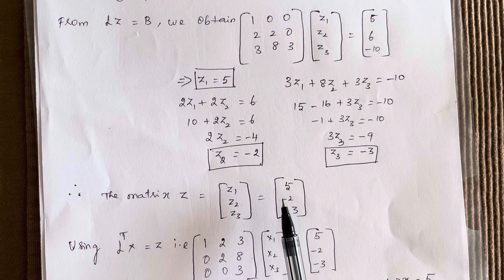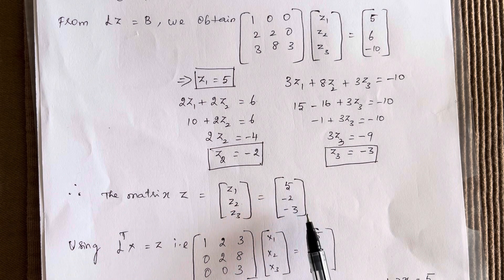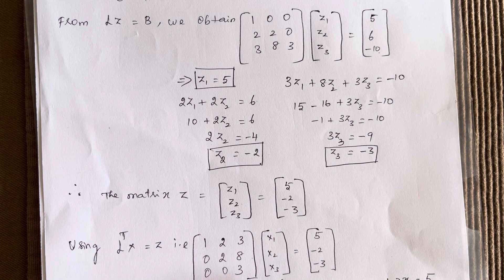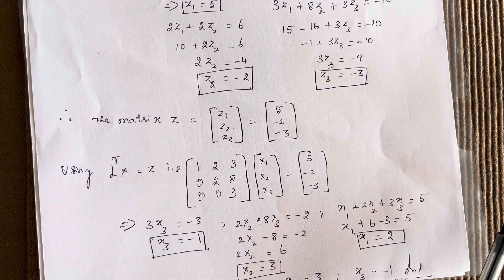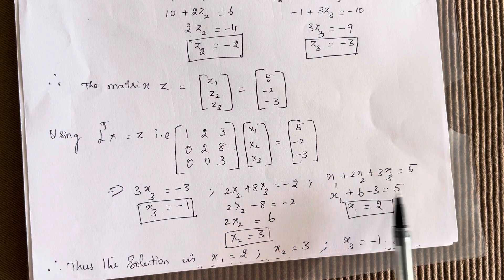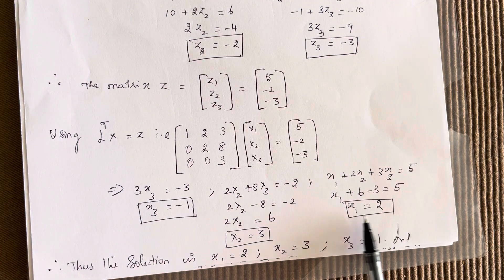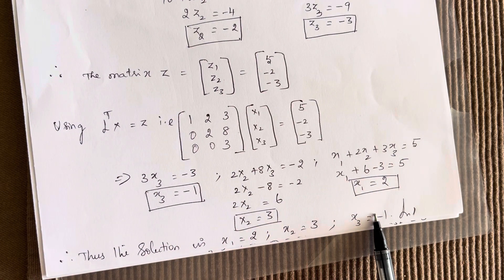Now substituting in L transpose·X equal to Z and using backward substitution: 3X3 equals minus 3, so X3 equals minus 1. Next, 2X2 plus 8X3 equals minus 2; substituting X3 as minus 1 gives X2 equals 3. Finally, X1 plus 2X2 plus 3X3 equals 5; substituting X2 and X3 gives X1 equals 2.